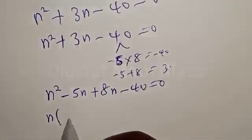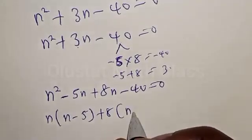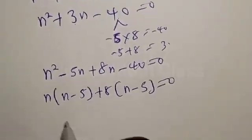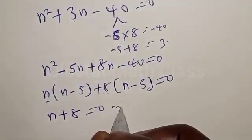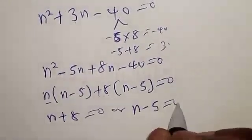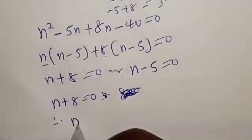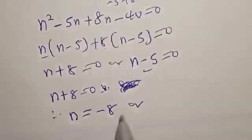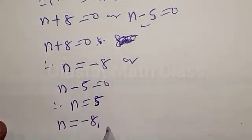Then we have n into n minus 5, plus 8 into n minus 5, is equal to 0. Therefore, n plus 8 is equal to 0, so n is equal to minus 8. Or from here, n minus 5 is equal to 0, therefore n is equal to 5. Our final answer is n is equal to minus 8 or 5.